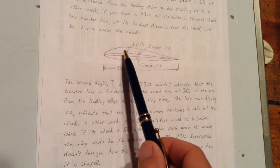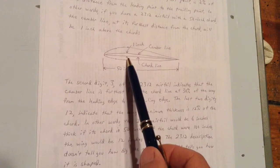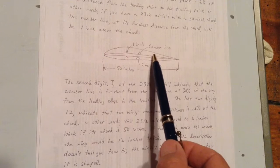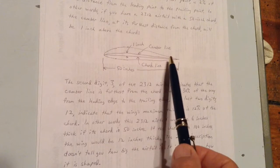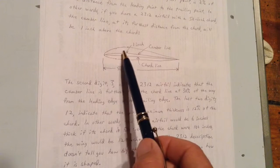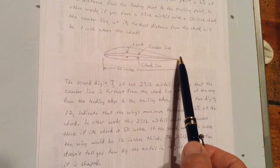As you can see this camber line is halfway between the top and the bottom. Its distance from there to there is equal to its distance from there to there. And it starts out at the same point that the cord line starts out, goes up above the cord and ends up at the same point that the cord line ends at.